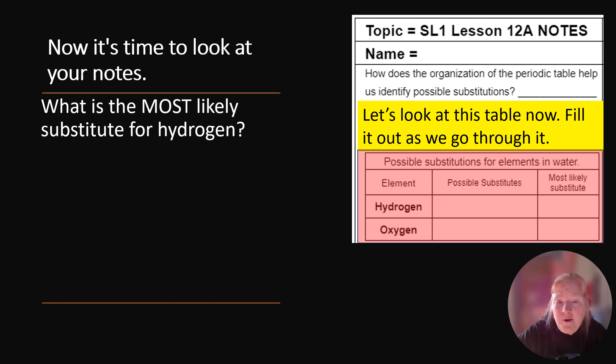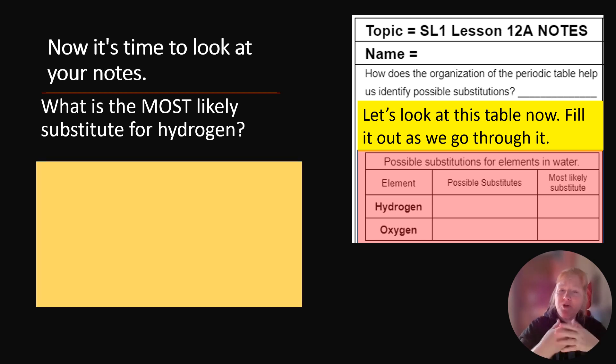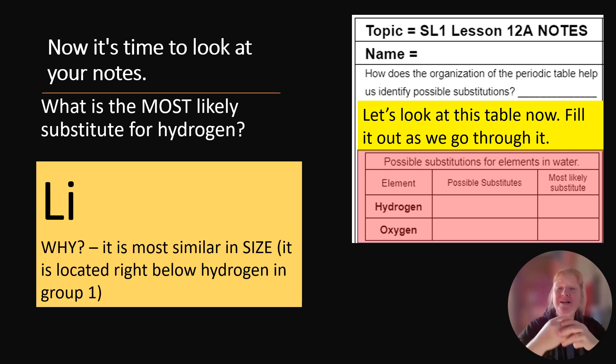What about the most likely substitute? So we just listed some substitutes, but which one is the most likely? Well, that's going to be Li. Why? Because it's smaller. Well, only because hydrogen is really small, so Li is most similar in size. It is the one right underneath hydrogen in group one. So remember, size does play a role in how elements behave. So they need to be more similar in size.